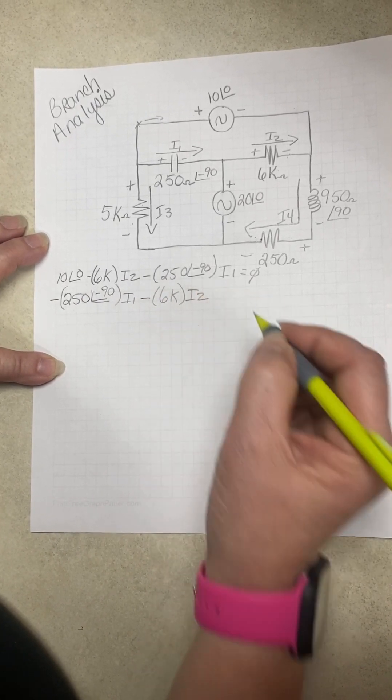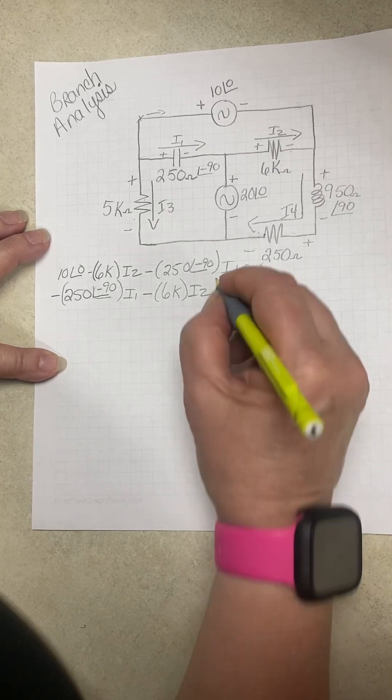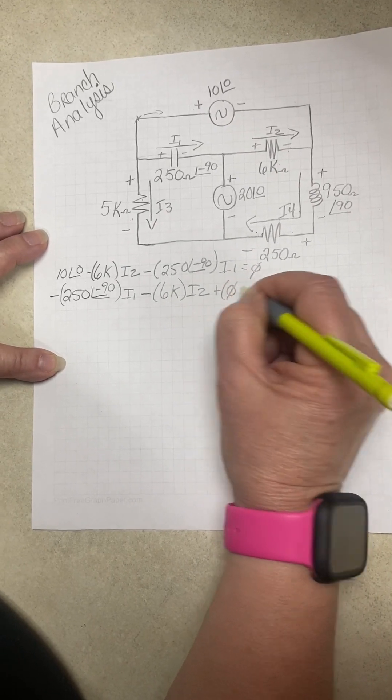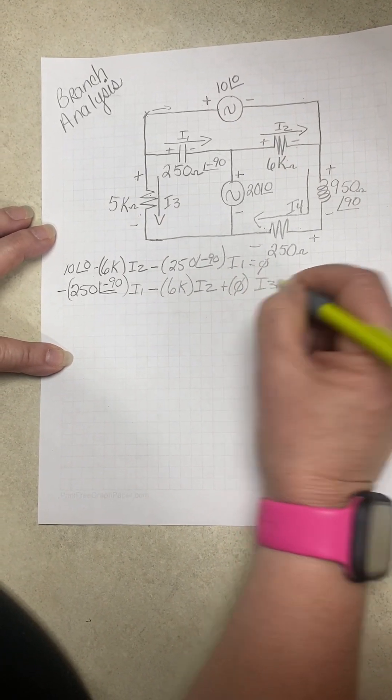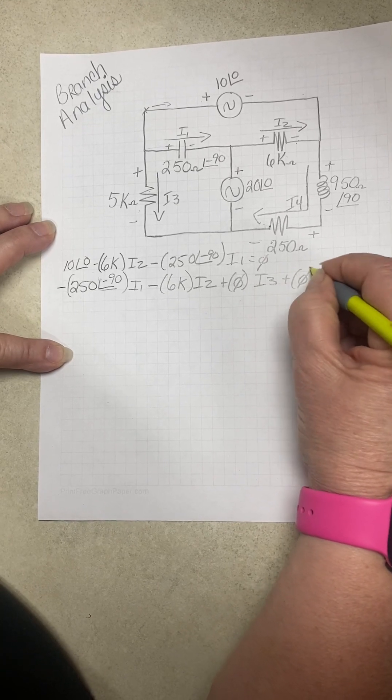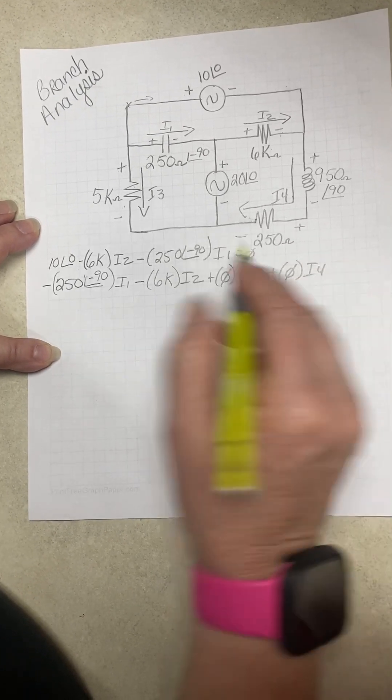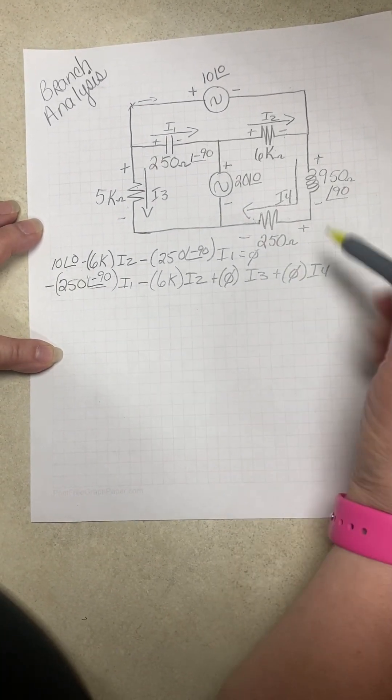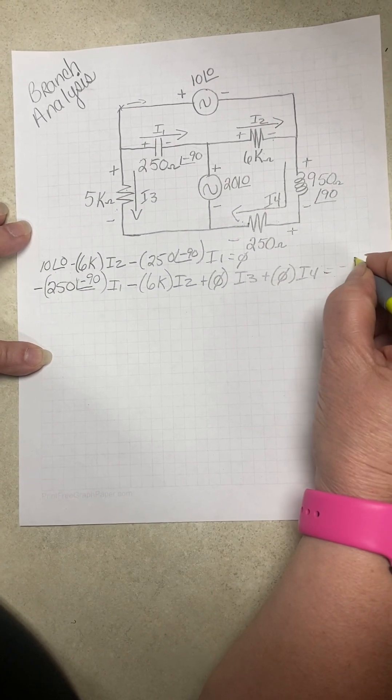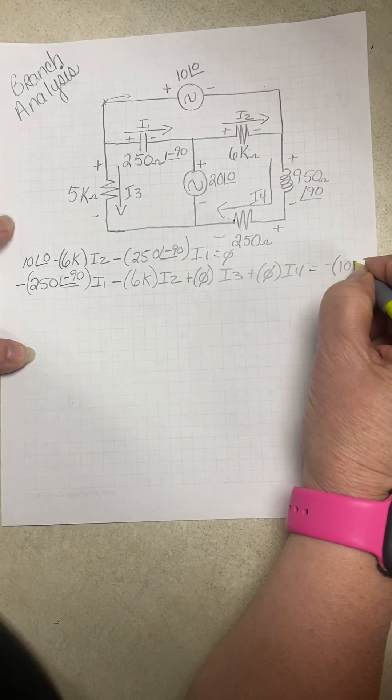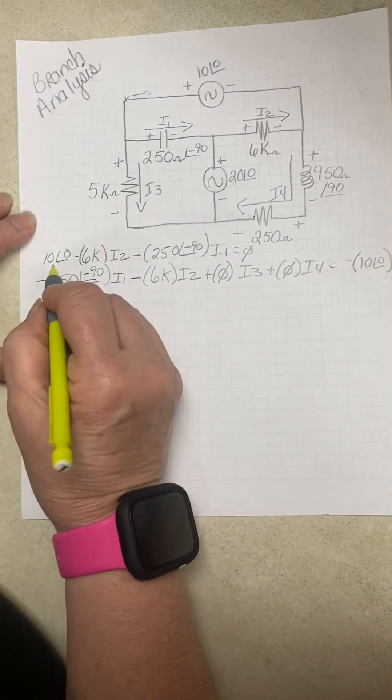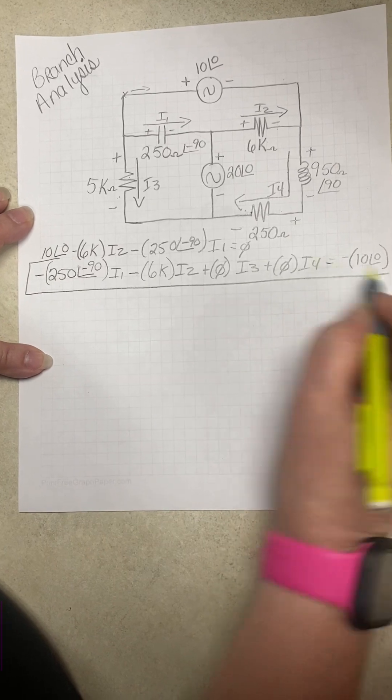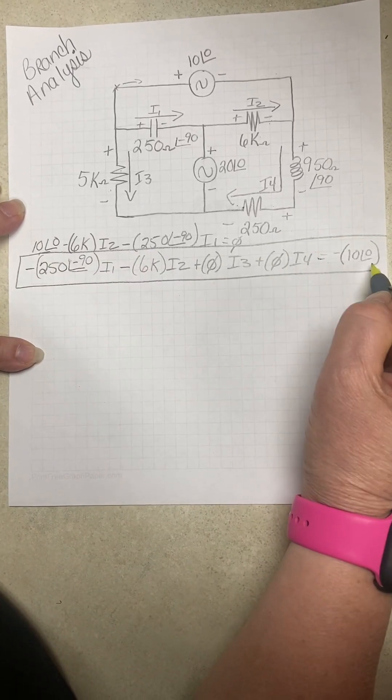We didn't pass three and four, so we're going to put our placeholder, zero I3 plus zero I4. We have a voltage here, it was positive, so on the other side of the equation it must be negative, equals negative 10 at zero. So that is our first equation.